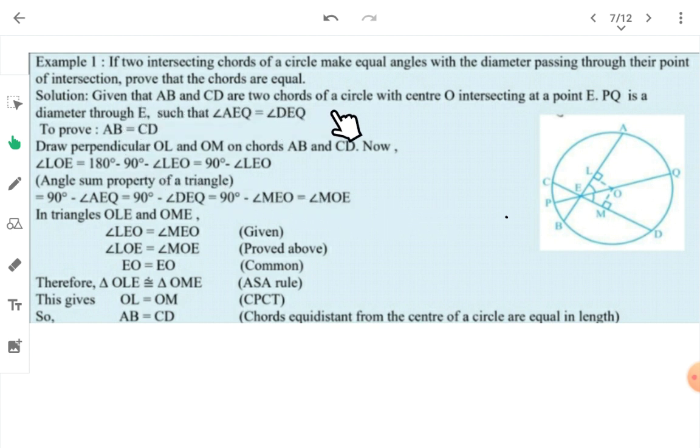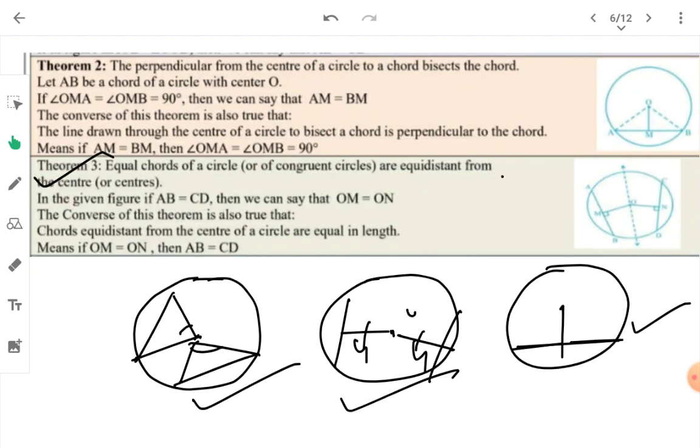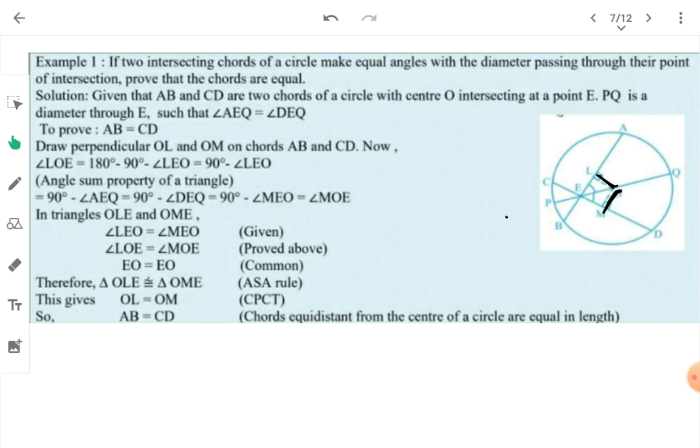So PQ is the diameter. The equal angles being formed are angle AEQ and angle DEQ. These are given as equal. You are given: AB and CD are two chords passing through center O, intersecting at point E. PQ is the diameter. Angle AEQ equal to DEQ is given. You have to prove the chords are equal, meaning AB equal to CD.